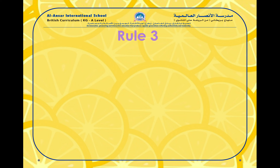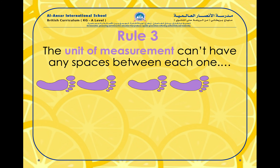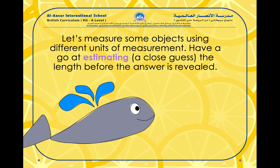Rule number three. The unit of measurement can't have any spaces between each one. So we cannot measure two, then leave a space, then put one and then one — no, they all need to be right next to each other, or they need to have the same amount of space in between each other. That is how we're going to get the best way of measurement.